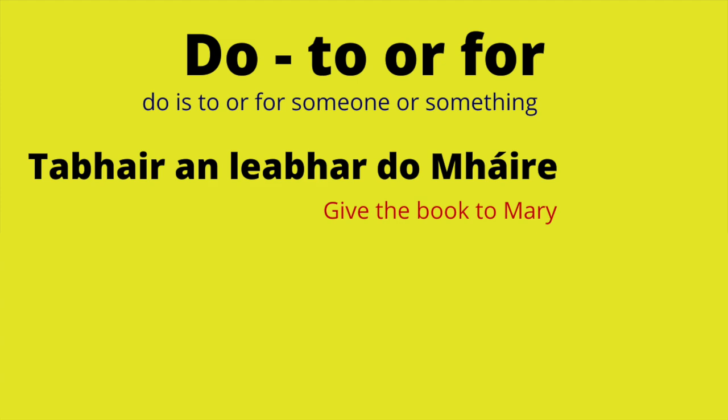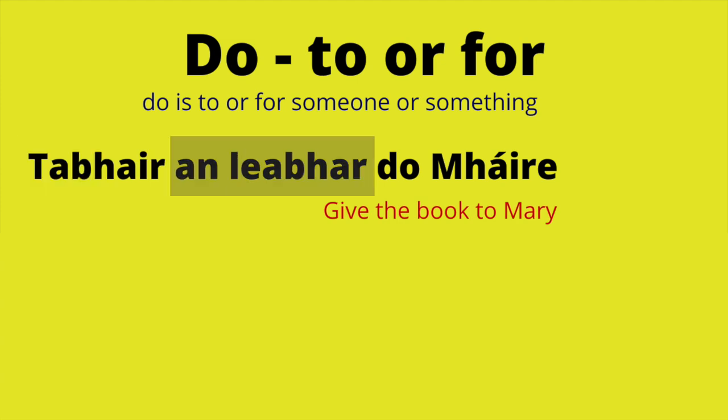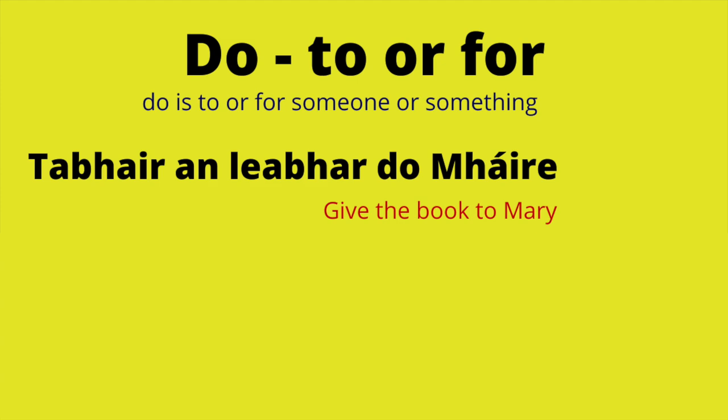So it literally means 'give the book' — 'tabhair' is 'give', 'an leabhar' is 'the book', and then 'do' means 'to'. We don't have to be specific in this particular sentence because the last word is 'Máire', so we know who it's been given to. We don't have to specify him or her — it's just 'do Máire', 'to Mary'. Give the book to Mary.